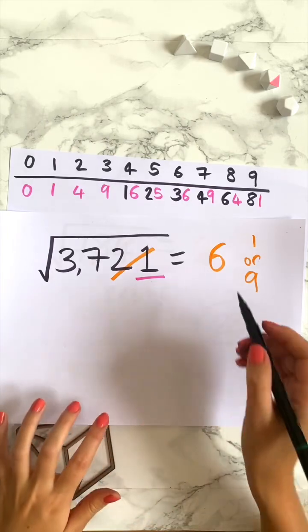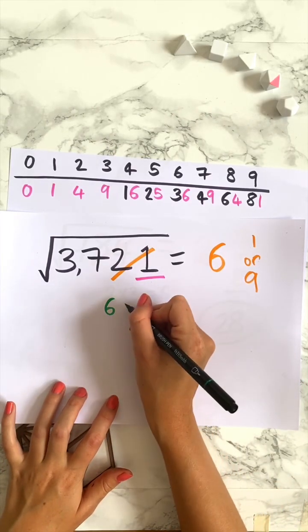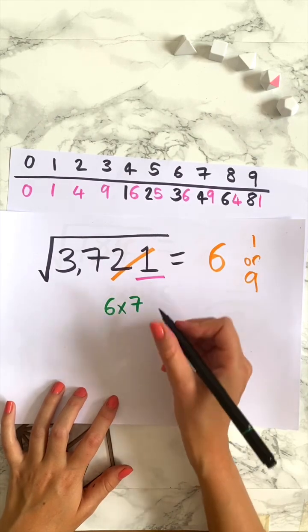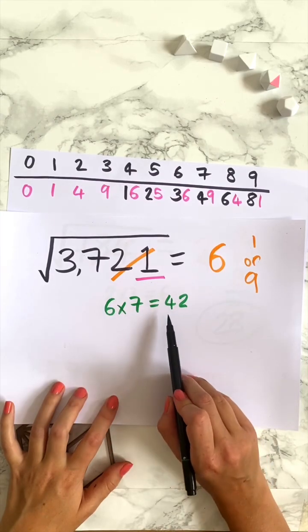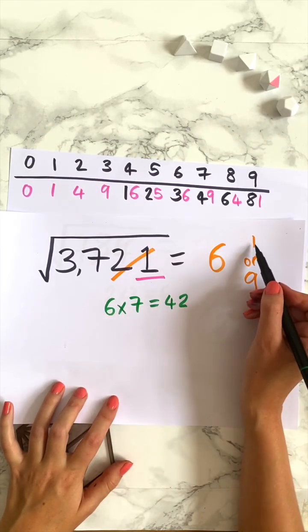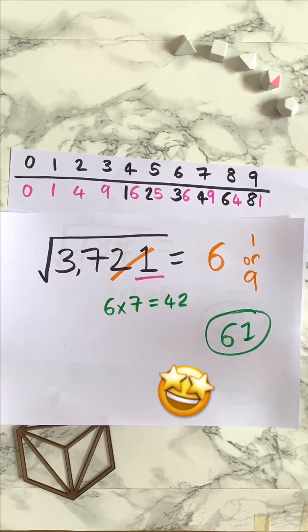Then we do this random thing where we write down the number that we've just done so 6 and then we times it by 1 above 6 so we times it by 7. 6 times 7 is 42. 37 is less than 42 so we take the smaller number. So our answer is 61. Dave will be amazed.